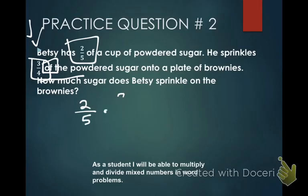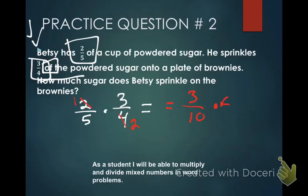So: two-fifths times three-fourths. Can I pre-simplify anything? Yes — two and four: two goes into two one time, two goes into four two times. Go ahead and multiply across, and you're going to get three over ten. I need to make sure it's simplified — it is. How much sugar? It's three-tenths of a cup. So the answer is three-tenths of a cup. Example two done.